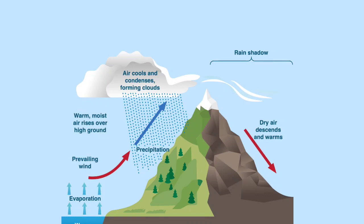Orographic rainfall is also called relief rainfall because this rainfall occurs basically due to the presence of some land barrier, and the topography of the region plays an important role in the occurrence of this type of rainfall.